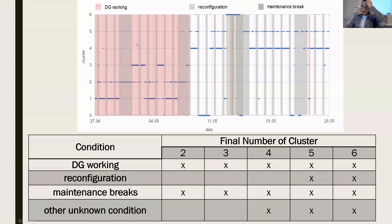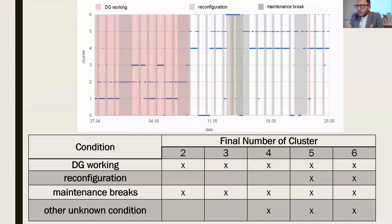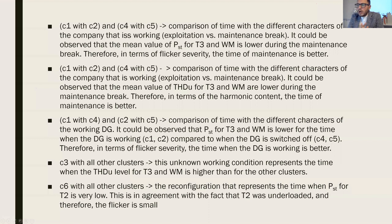The data was classified by different working conditions. Having knowledge about the mining industry, during classification one other unknown condition was also indicated. Increasing the number of clusters lets us know about the different working conditions and their different impact on the classification.